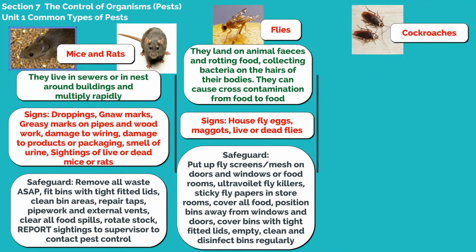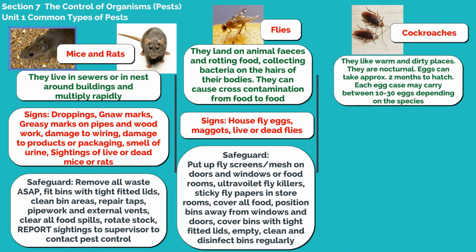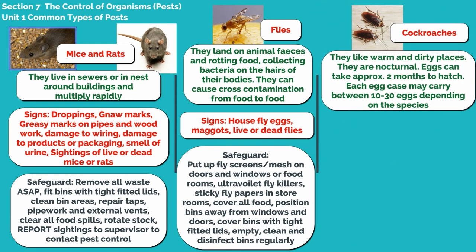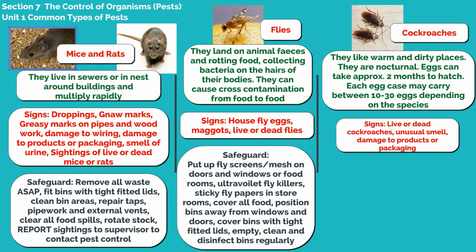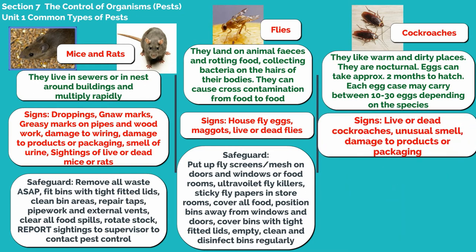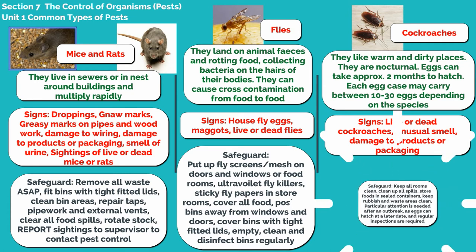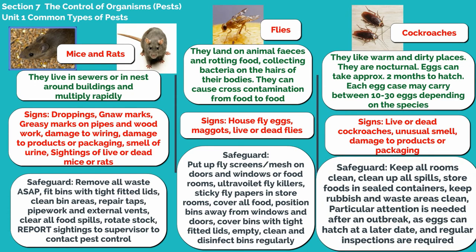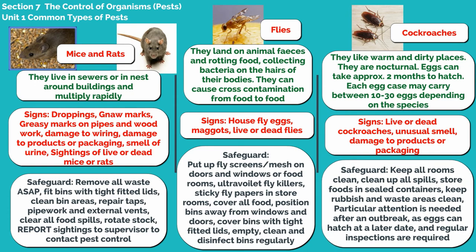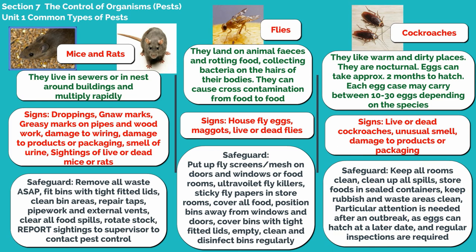Cockroaches like warm and dirty places. They are nocturnal. Eggs can take approximately two months to hatch. Each egg case may carry between 10 and 30 eggs depending on the species. Signs of them are live or dead cockroaches, unusual smell, and damage to products or packaging.